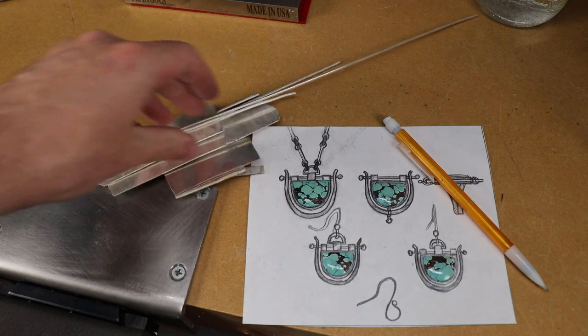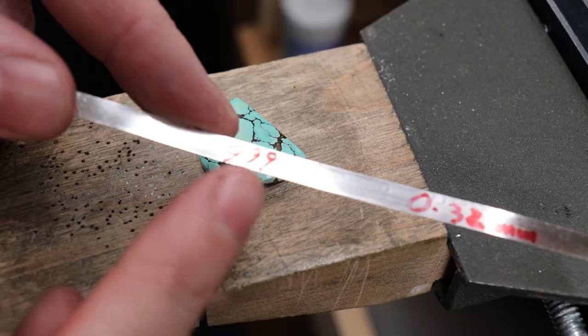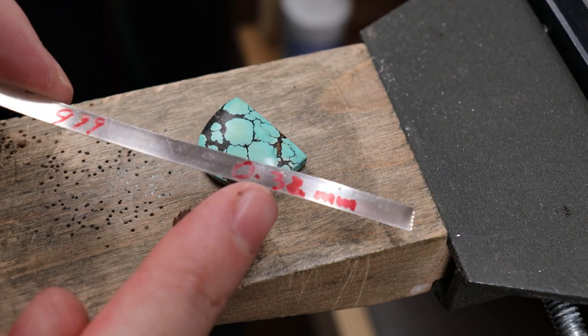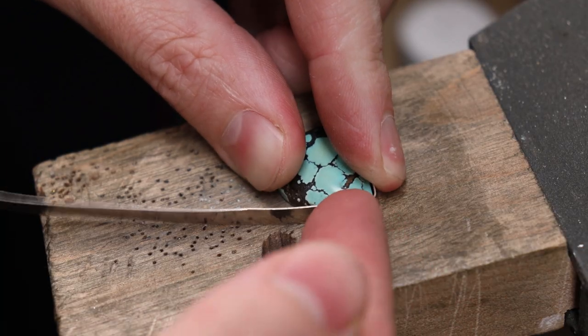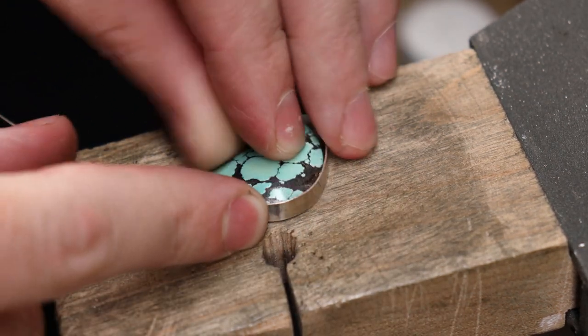For the most part, I'm going to be using recycled sterling silver that I made into wire and sheet metal on my mill. But when it comes to the bezel, I'm going to be using some fine silver due to it being easier to bend and a lot softer, so it's easier to mold over your stone.